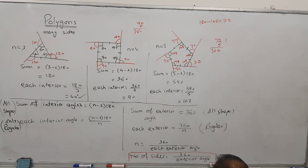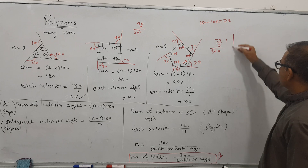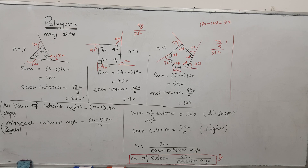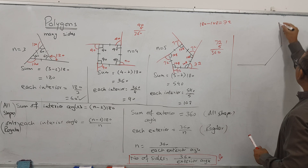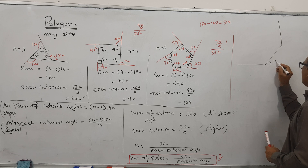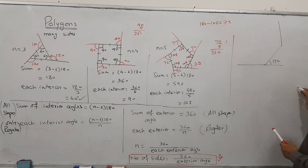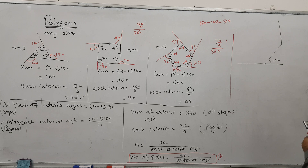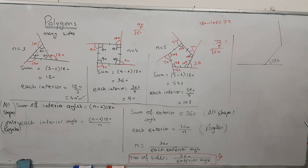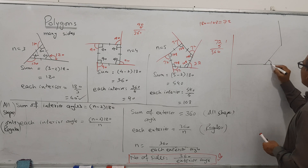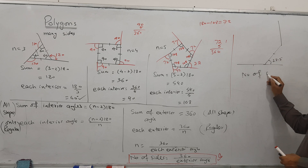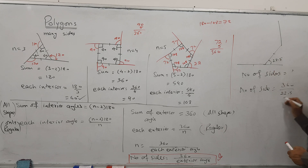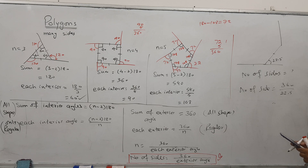For example, this question: the exterior angle is 22.5 degrees. I want to find how many sides. Using the formula: number of sides equals 360 divided by the exterior angle. So 360 divided by 22.5 gives 16 sides.